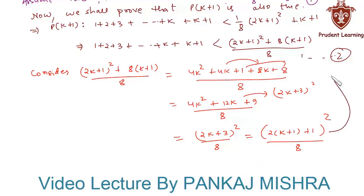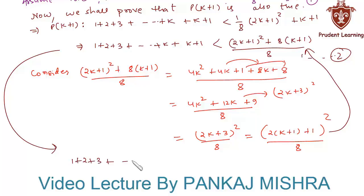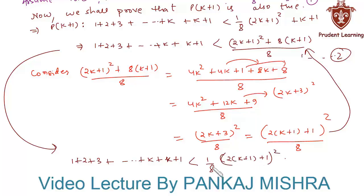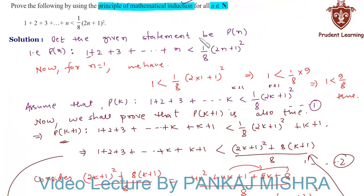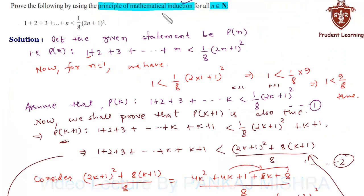Substituting this back into relation 2, we have 1 plus 2 plus 3 all the way up to (k+1) is less than one-eighth of (2(k+1)+1) whole square. Thus P(k+1) is true whenever P(k) is true. Hence by the principle of mathematical induction, the statement P(n) is true for all natural numbers n.